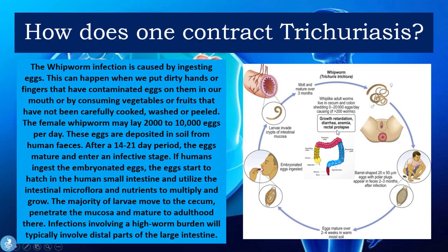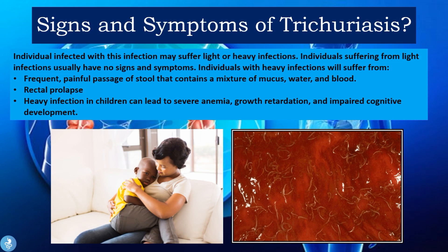Something important to note is that growth retardation, diarrhea, anemia, and rectal prolapse are very common symptoms. These four symptoms are particularly severe in children. When children become infected with this disease, we see severe growth retardation, diarrhea, anemia, and rectal prolapse.